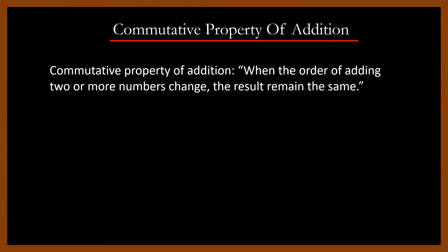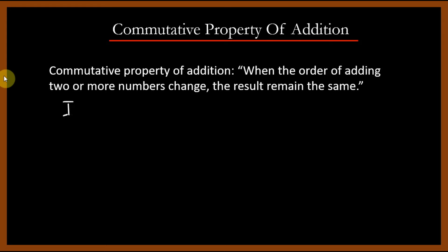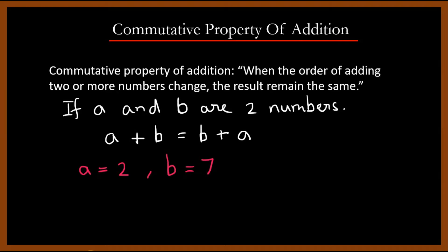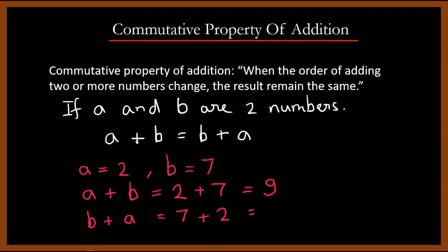Commutative property of addition states that when the order of adding two or more numbers changes, the result remains the same. So if A and B are two numbers, then by commutative property, A plus B equals B plus A. Suppose A equals 2 and B equals 7, then A plus B equals 9 and B plus A equals 9. Therefore, the commutative property of addition is true.